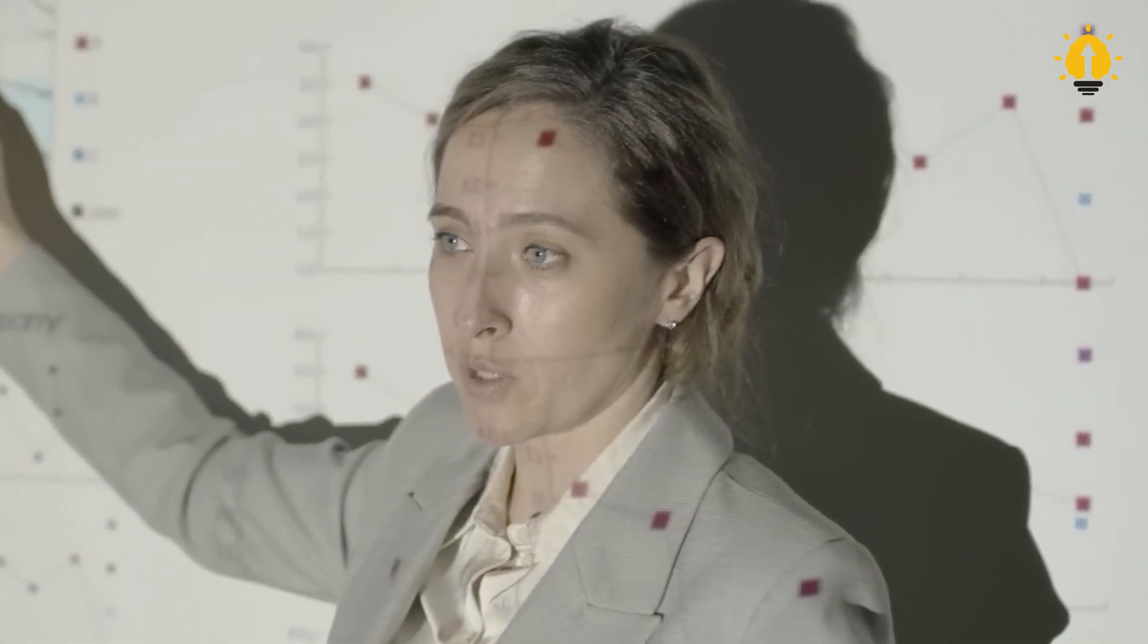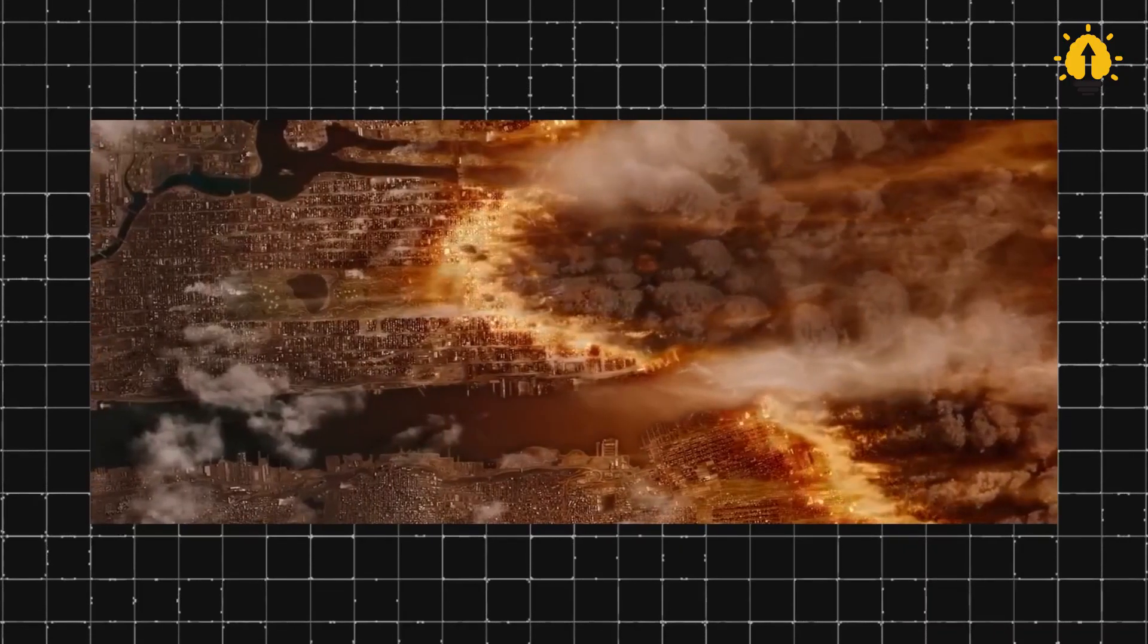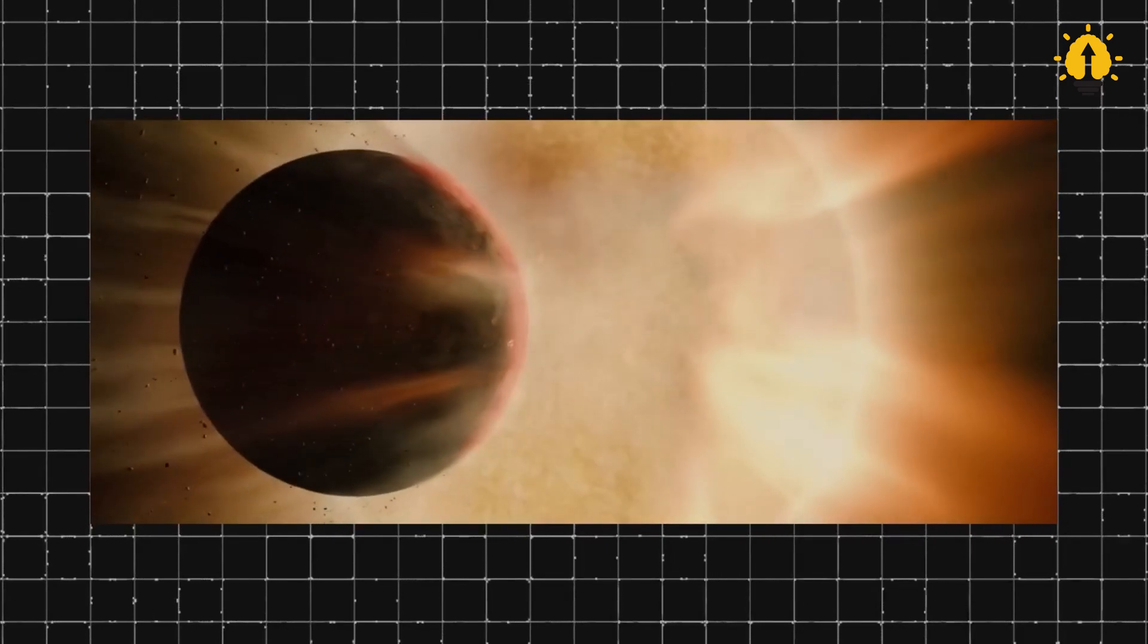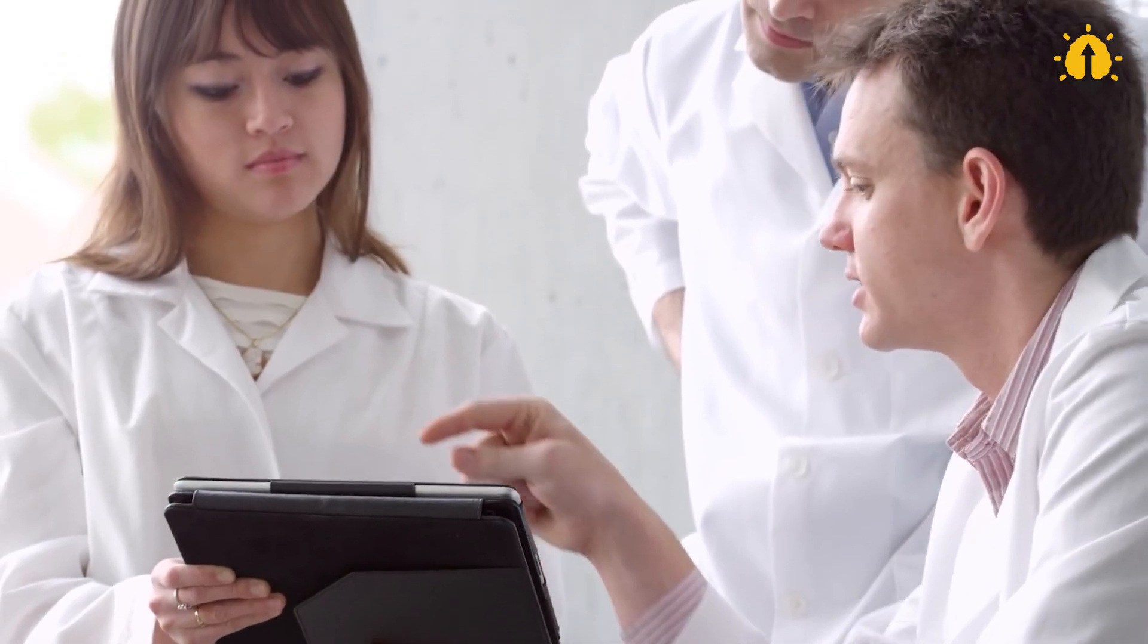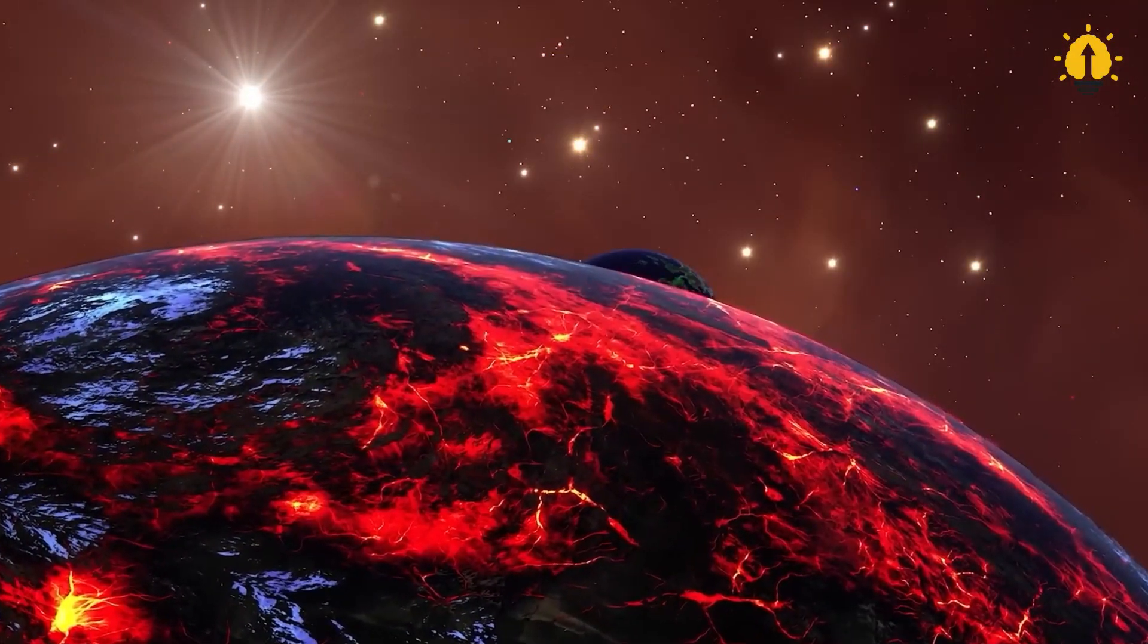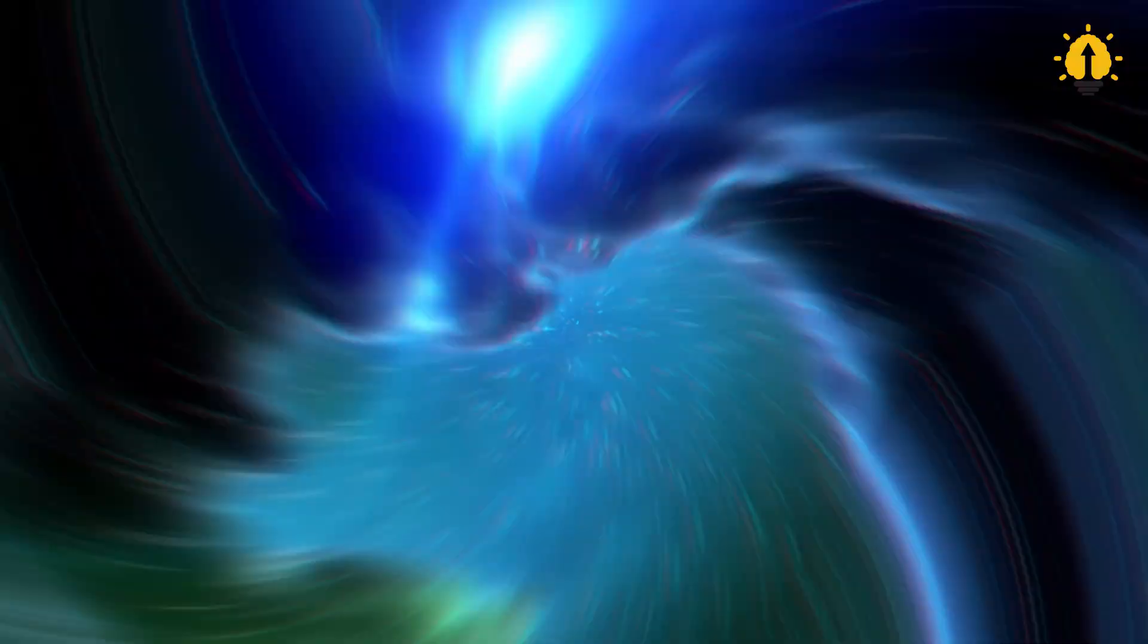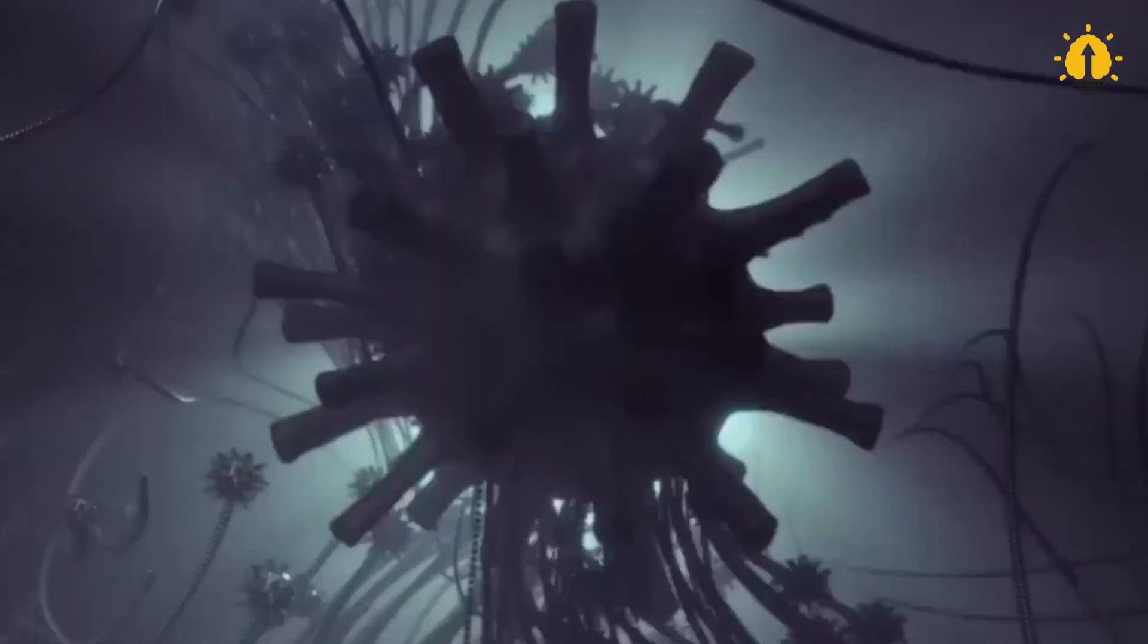However, recent calculations based on various models have revealed a startling fact. The number of planets in our solar system is actually lower than it should be. This realization has left scientists scratching their heads and pondering a fascinating question. Where did these lost planets go? Did they vanish into thin air, or were they never there to begin with?